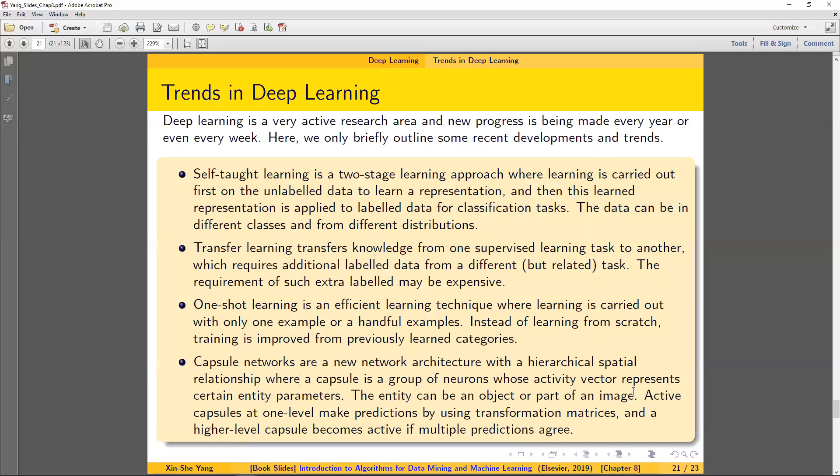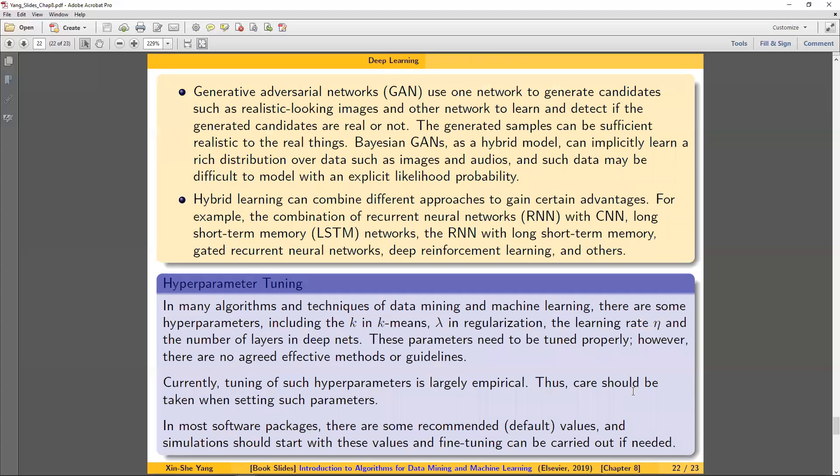Now there are all kinds of new trends in deep learning. You should be aware, so you can read through some of this in the textbook, but I just wanted to point you out what are the key ones. Self-taught learning, transfer learning, one-shot learning, and capsule networks. If you need time, you can pause the video, read through this slide, or you could read the textbook on your own. And more like GAN and hybrid learning.